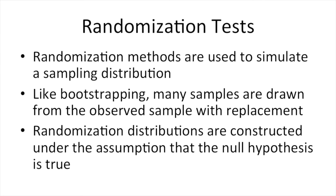Just like bootstrapping in Lesson 6, randomization methods can be used to simulate a sampling distribution. Like bootstrapping, many samples are drawn from the observed sample with replacement. The difference is that randomization distributions are constructed under the assumption that the null hypothesis is true. We have a hypothesized population proportion or population mean, and we're going to center our sampling distribution on that value.